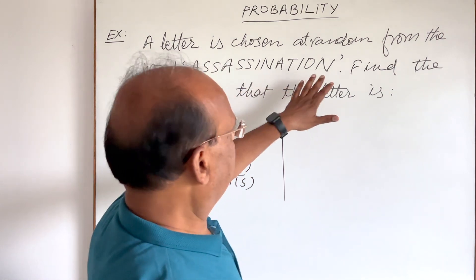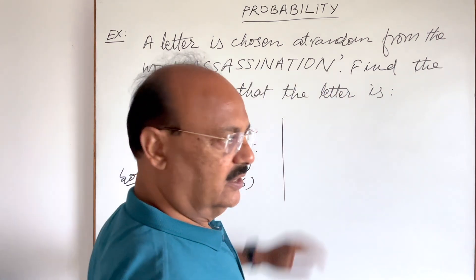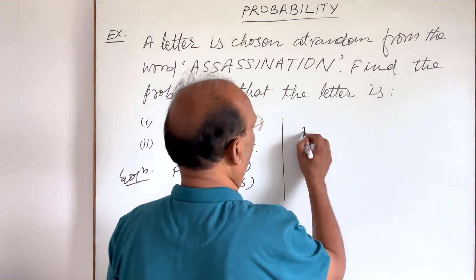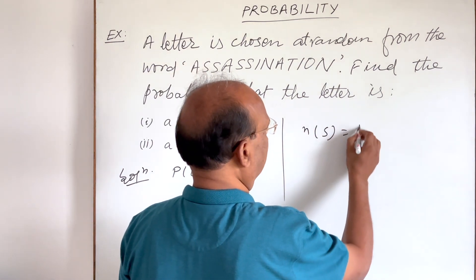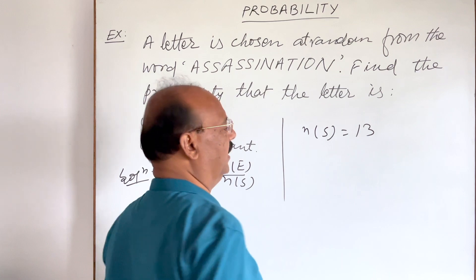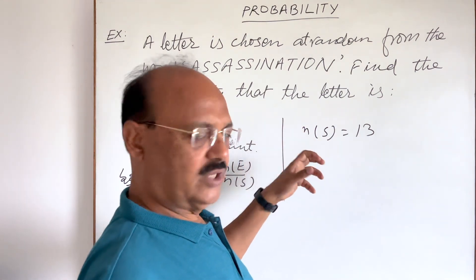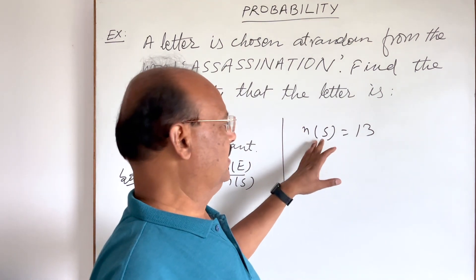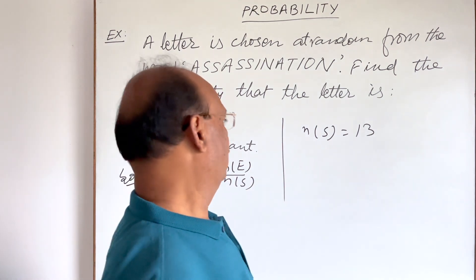Total number of letters is 13. So n(S) is 13. n(S) means total number of outcomes - possible outcomes in the sample space is 13 here.